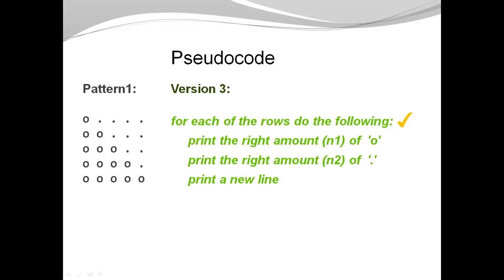So I could say for each of the rows do the following, print the right amount of circles. Print the right amount of dots. Print a new line. The last task is easy. We know how to do that.